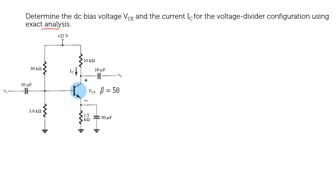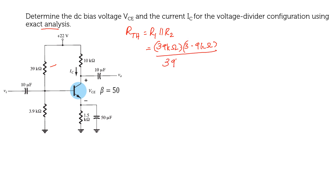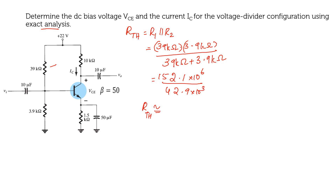In the case of exact analysis, we are going to convert the circuit into a Thevenin's equivalent circuit. Going directly to the formula: Rth will be equal to R1 parallel to R2. R1 is equal to 39 kΩ and R2 is equal to 3.9 kΩ, divided by 39 kΩ plus 3.9 kΩ. Solving this gives approximately 152.1×10⁶ divided by 42.9×10³, so Rth is approximately equal to 3.545 kΩ.